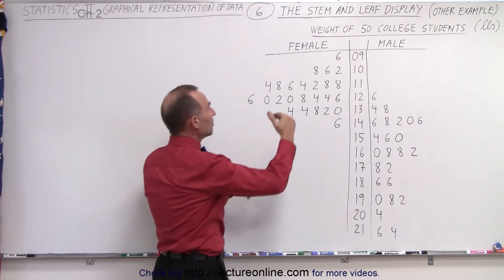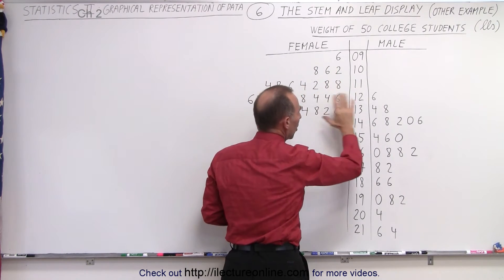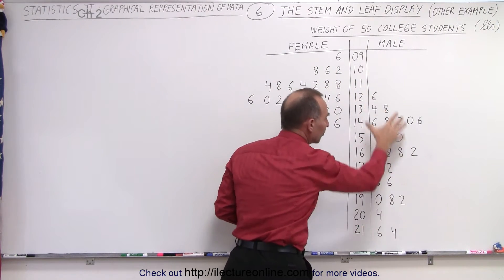Also notice that the females tend to be grouped closer together, so you can see that the difference in the weight of females tends to be smaller than the difference in the weight of the males.